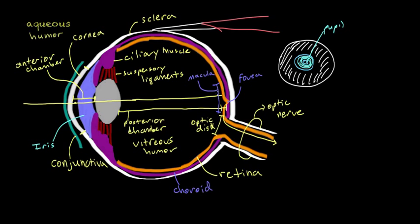So now we've covered basically all the different structures of the eye. You should be able to trace a light ray's path from the front of the eye to the very back and understand what the different structures it hits are.